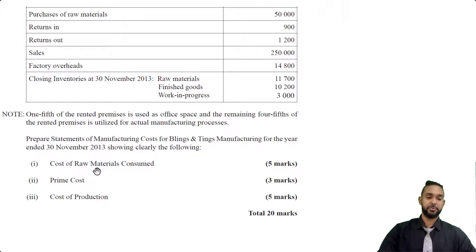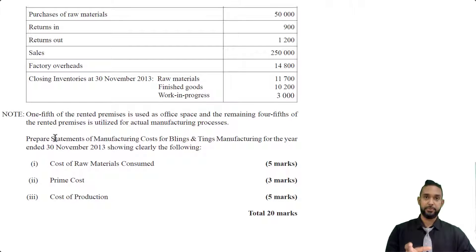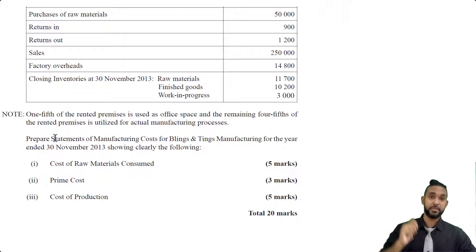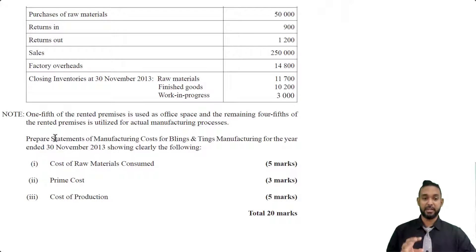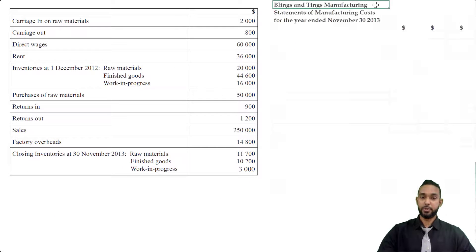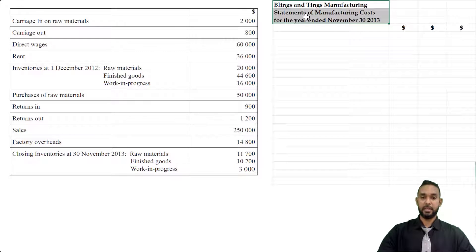Instead of doing three separate statements, I just did a single manufacturing account. If you are not familiar with the manufacturing account, I'm going to put a card up there and a link to it in the description below, so be sure to check that video out and then come back here. As per usual, please head it up properly with the name of the entity, name of the statement, and the period to which it applies.